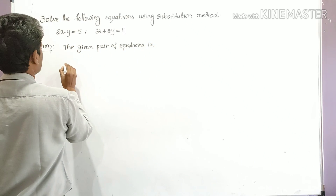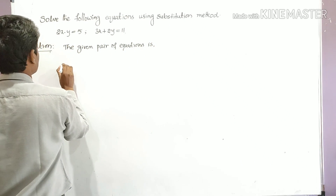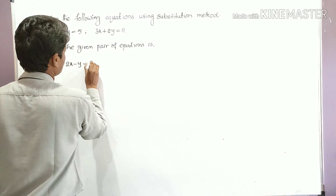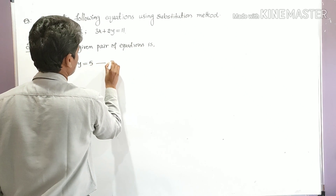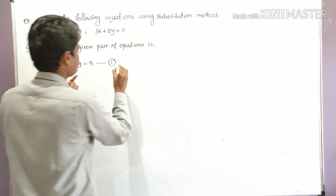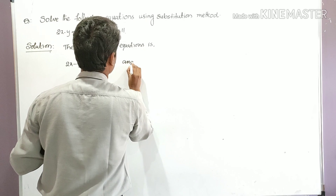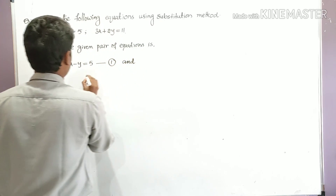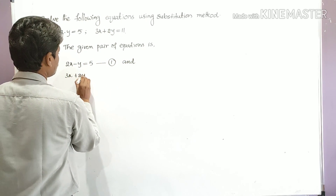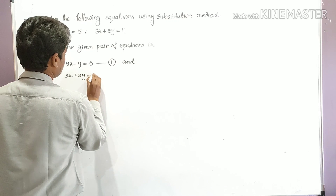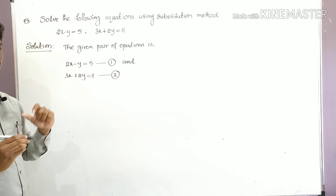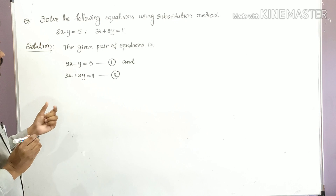Let the first equation be: two x minus y is equal to five — let it be equation number one. And the second equation: three x plus two y is equal to eleven — let it be equation number two.